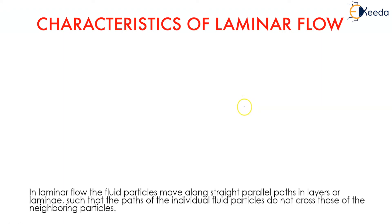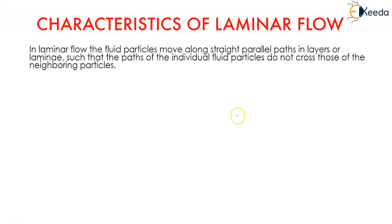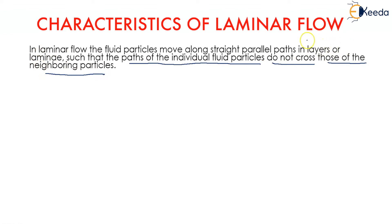Now, what are the characteristics of laminar flow? In laminar flow, the fluid particles move along straight parallel paths in layers or lamina, such that the paths of the individual fluid particles do not cross those of the neighboring particles. That means the layers slide over each other without crossing — they flow parallel to each other.